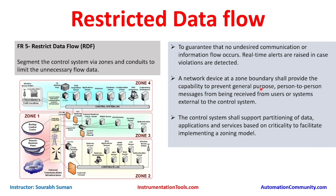The firewall is not the only zone protection device. We can put unidirectional gateways, data diodes, or even a router with an Access Control List (ACL) to prevent some communications. However, a router with ACL will not have antivirus capability, intrusion prevention, or detection capabilities that a firewall has. A Layer 3 switch with ACL can also serve the purpose, but it is not exactly a firewall.